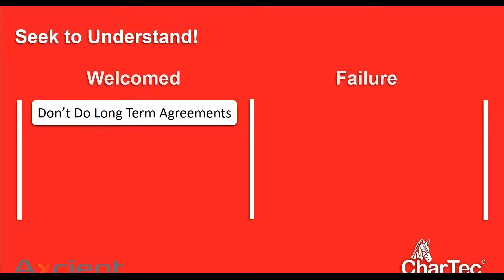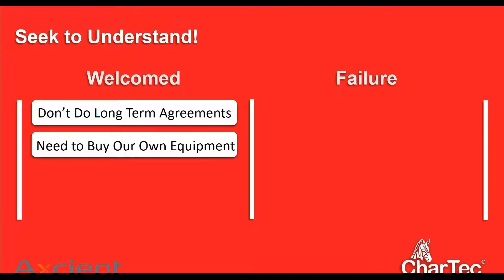The next one: 'At the end of 36 months, do we own the equipment?' Our response is: 'No, we maintain ownership of the equipment.' And they may just say okay — so answer with confidence and see if they actually have a problem with it. Don't always assume because they ask a question it's an objection. But if they push back — 'We've been in business 25 years and always owned our own equipment — do we have an option to own it?' — that's where the strategy comes into play.